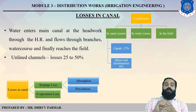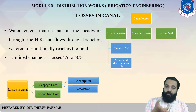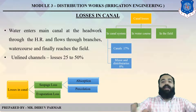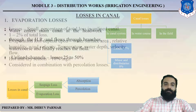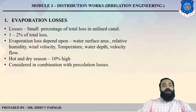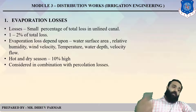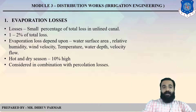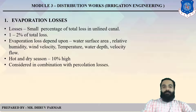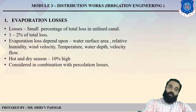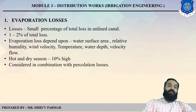There are two types of losses in canals: seepage loss and evaporation loss. Seepage loss has two parts: absorption and percolation. Evaporation loss is a small percentage — about one to two percent of total loss. Evaporation loss depends on surface area, humidity, velocity of wind, temperature, and depth of water. In hot and dry seasons, the loss increases by 10 percent.